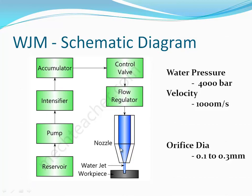From the nozzle, pressure energy is converted to kinetic energy, and when it hits the workpiece, machining takes place. The water pressure is of the order of 4000 bars — atmospheric pressure is about one bar — so this is very very high pressure. The velocity obtained is 1000 meters per second. The orifice diameter of the nozzle varies from 0.1 to 0.3 millimeters — that's how small the nozzle size is. This small diameter at high pressure generates a lot of force on the workpiece, sufficient to cause material removal.